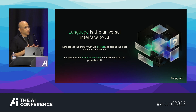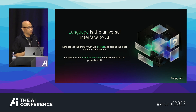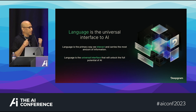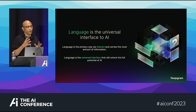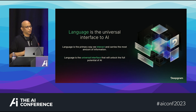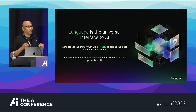We strongly believe, after this journey so far, that language is the universal AI interface. There are two primary reasons for this. One is that it is the natural way we communicate as humans. Historically, we didn't have these tools, so we started using CLIs, shortcuts, and UIs — and those still have a good place in the future — but language is the primary way we want to communicate.